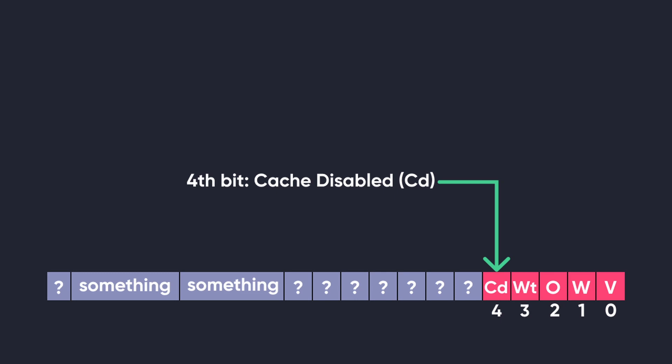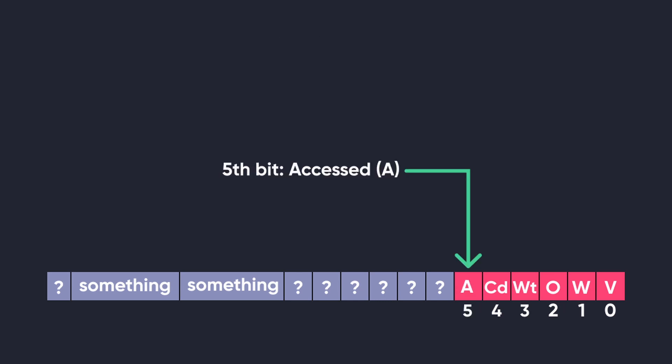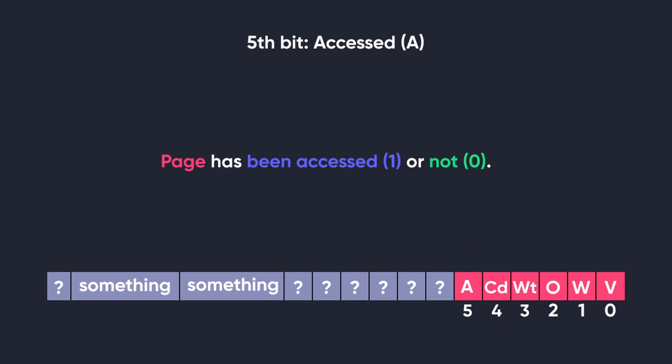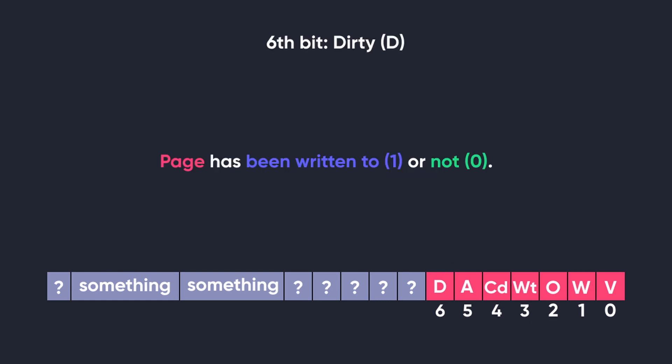The fourth bit is cache disabled. As the name suggests, it lets the MMU know whether to cache the page or not. When set to 1, the page is not cached; when set to 0, the page is allowed to be cached. The fifth bit is accessed — it tells whether the page has been accessed after being created. When set to 1 the page is accessed; when set to 0 it has not been accessed. The sixth bit is dirty, which simply tells whether the page has been written to or not.